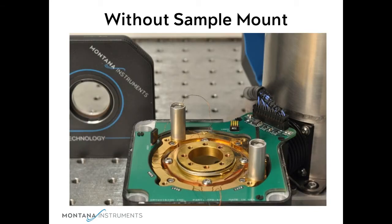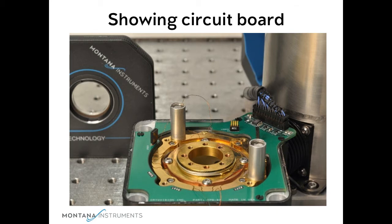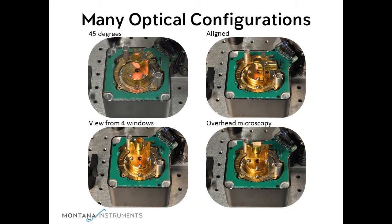Let's remove the sample mount and see just how flexible the sample holder is. On the green circuit board, you can see the internal connectors for your experiment. These are connected to the user connector on the back panel of the unit. These views show how the mount can be configured for various applications.